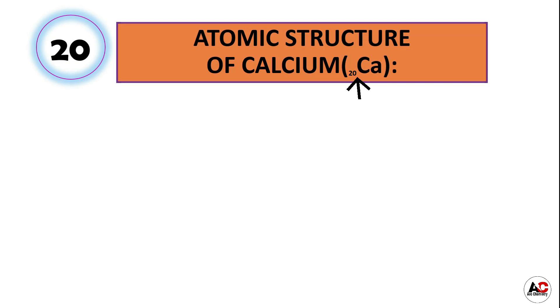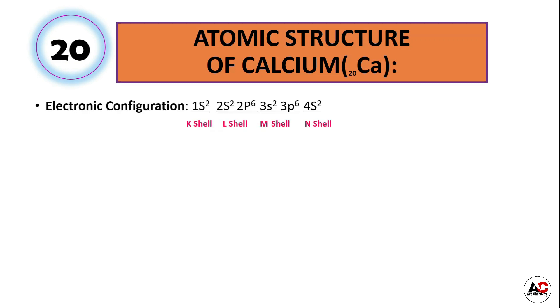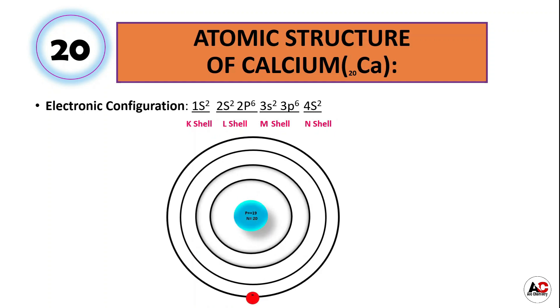Now the last element, calcium, with atomic number 20, meaning it has a total of 20 electrons. The electronic configuration of calcium is 1s2, 2s2, 2p6, 3s2, 3p6, and 4s2. With the help of this we will draw the atomic structure of calcium. It has 20 protons and 20 neutrons inside the nucleus and 20 electrons around the nucleus, distributed as: 2 are in the K shell, 8 are in the L shell, 8 are in the M shell, and 2 are in the N shell.